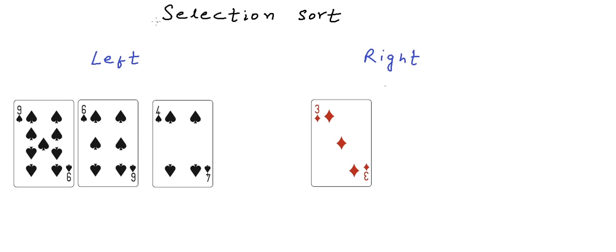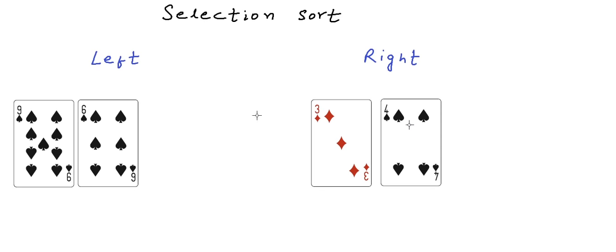First we can select the minimum card out of these cards and move it to the right hand. Now once again, from whatever card is left in the left hand, we can select the minimum and move it to the right hand next to previous cards in the right hand. And we can go on repeating this process. At any stage during the process, the left hand will be an unsorted set of cards. And the right hand at any stage will be sorted set of cards.